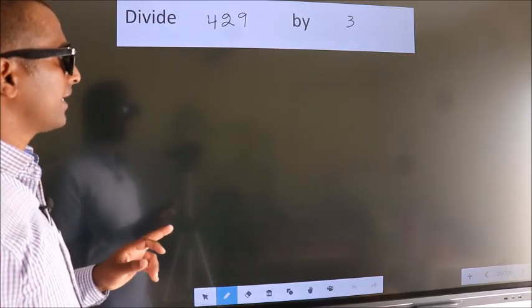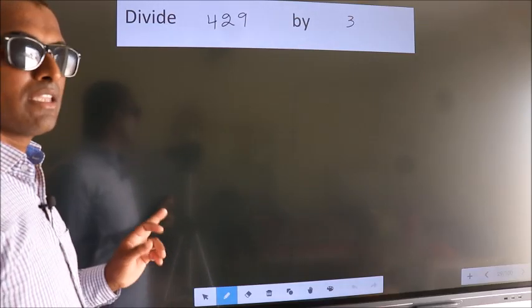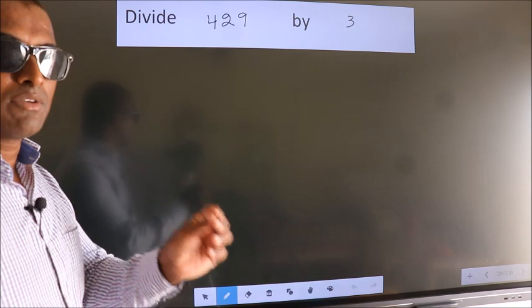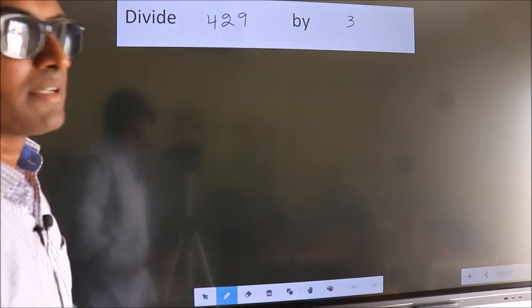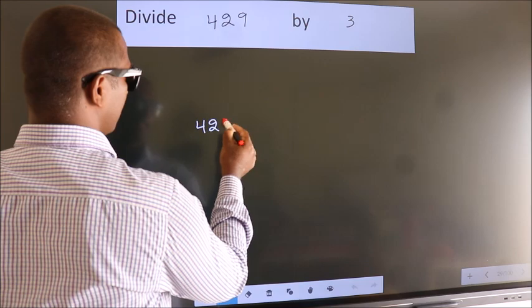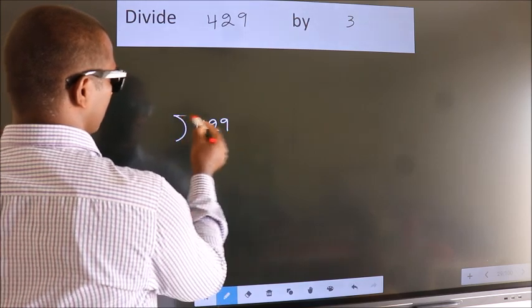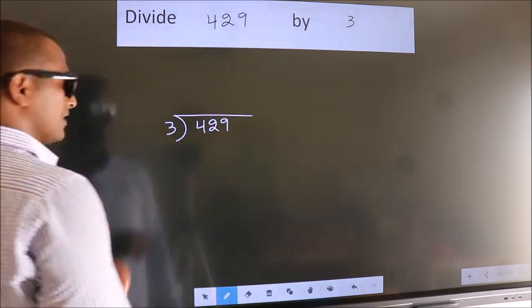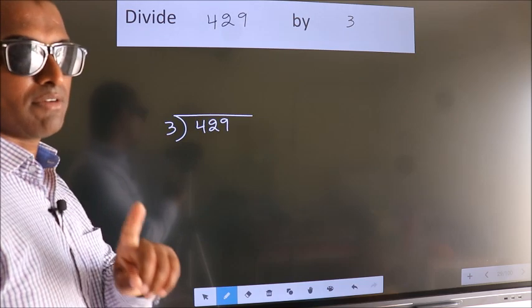Divide 429 by 3. To do this division, we should frame it in this way. 429 here, 3 here. This is your step 1.